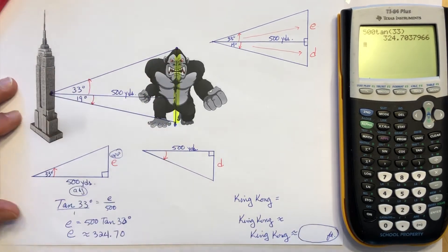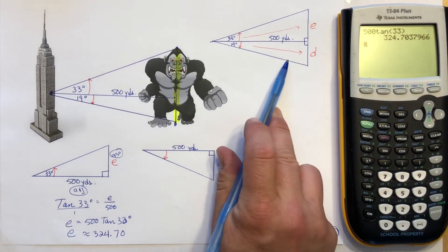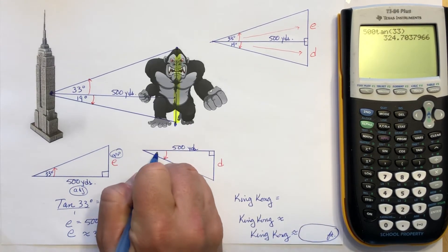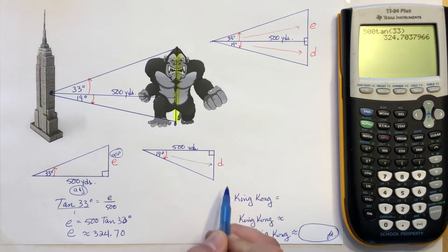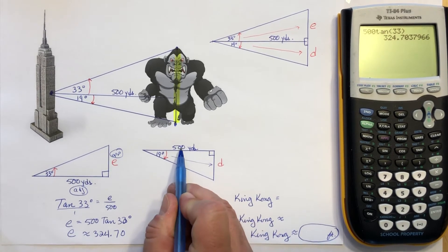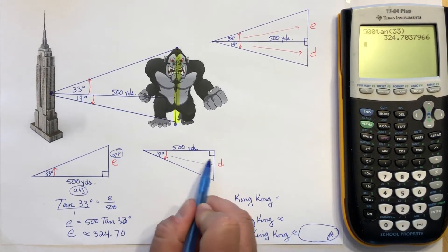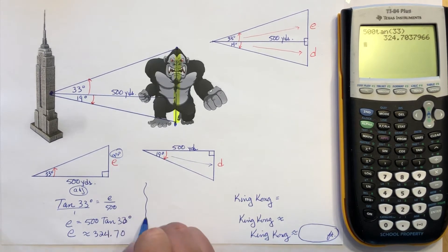Now what I'm gonna do is, now that we've established that, I'm gonna come over here and deal with the bottom one. That is an angle of depression of 19 degrees. Again, I want the opposite side. I know the adjacent. Even though it's upside down, opposite, adjacent. I'm still using tangent.